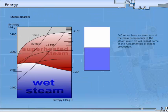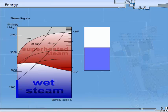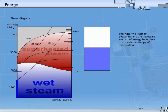Before we have a closer look at the main components of the steam plant, we will repeat some of the fundamentals of steam production. As you know, the boiling temperature of water is dependent on the pressure. When we are heating the water at constant pressure, the temperature will increase until we reach the saturation temperature. The water will start to evaporate, and the necessary amount of energy to achieve this is called enthalpy of evaporation. This energy will remain in the steam until the steam is condensed.